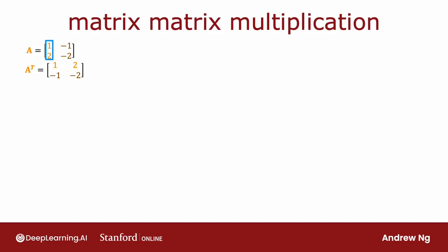The first column, 1, 2, becomes the first row 1, 2, because it's just laid on the side. The second column, negative 1, negative 2, becomes the row negative 1, negative 2. So the way you transpose a matrix is you take the columns and lay them on the side one column at a time, giving you A transpose. We also have matrix W: columns 3, 4 and 5, 6. A useful way to think about matrices for neural network implementations is: if you see a matrix, think of its columns; if you see the transpose of a matrix, think of the rows as being grouped together.